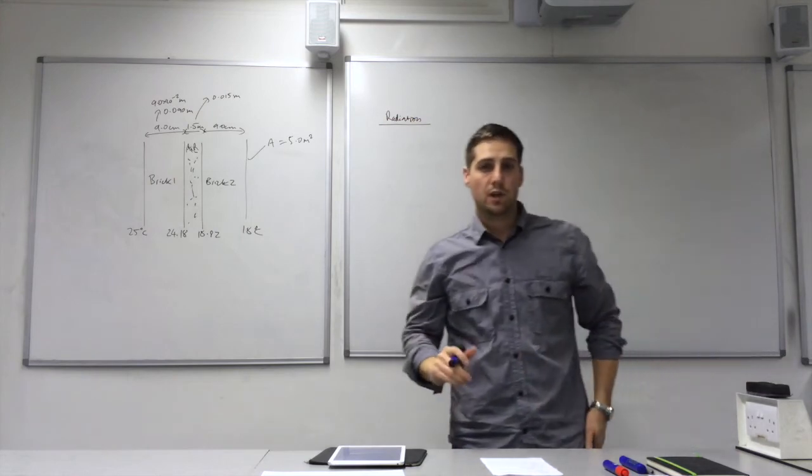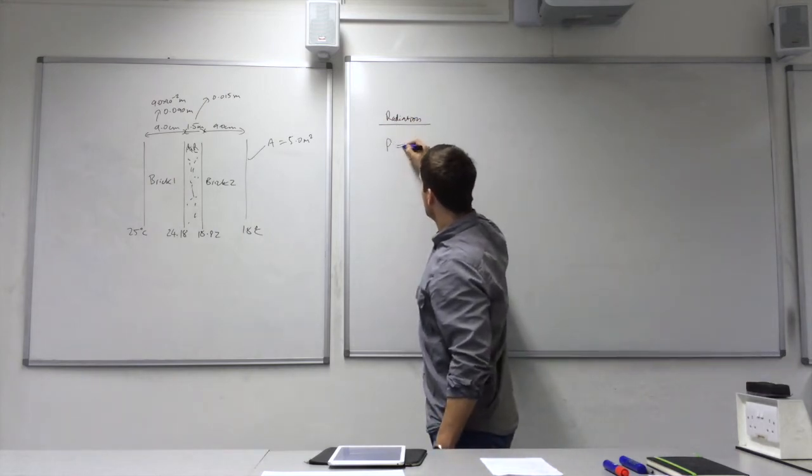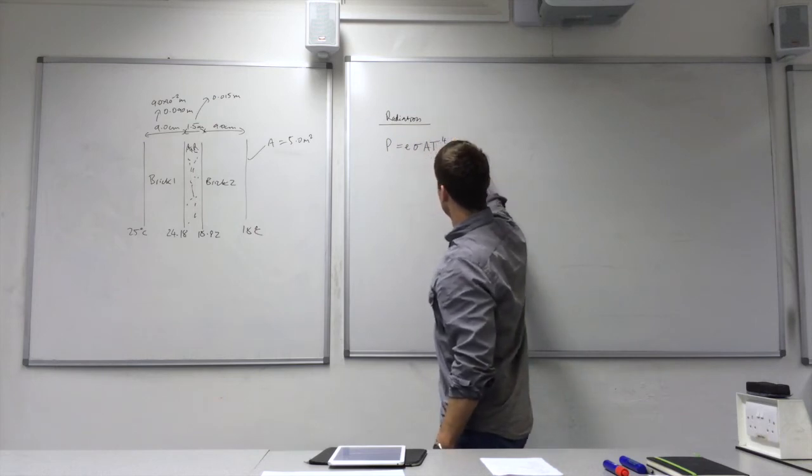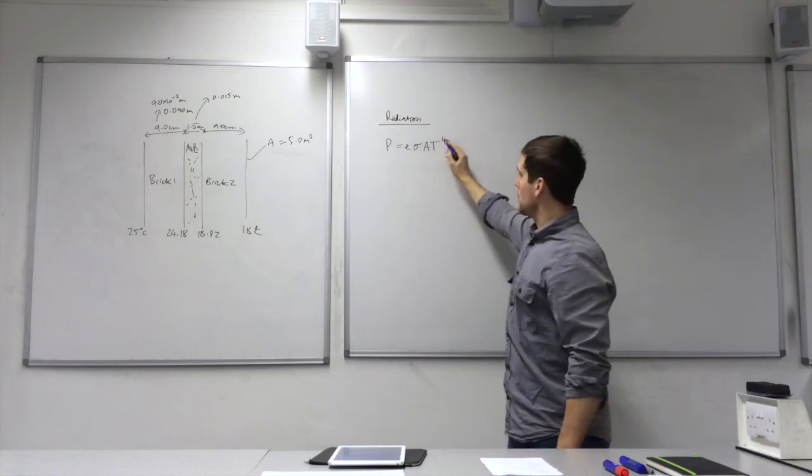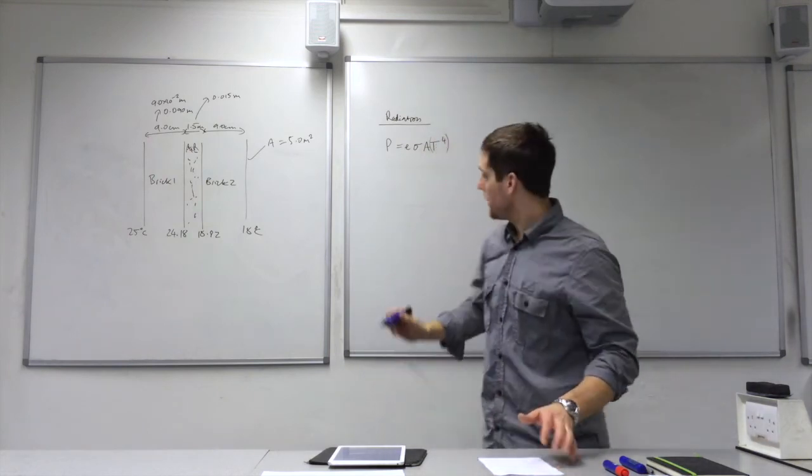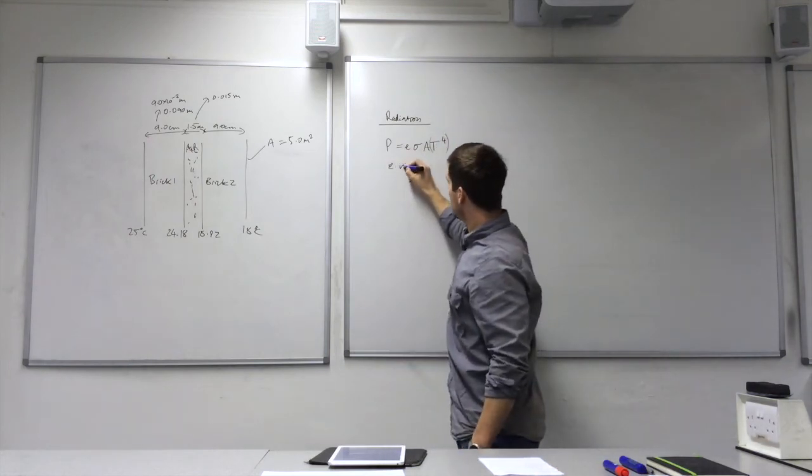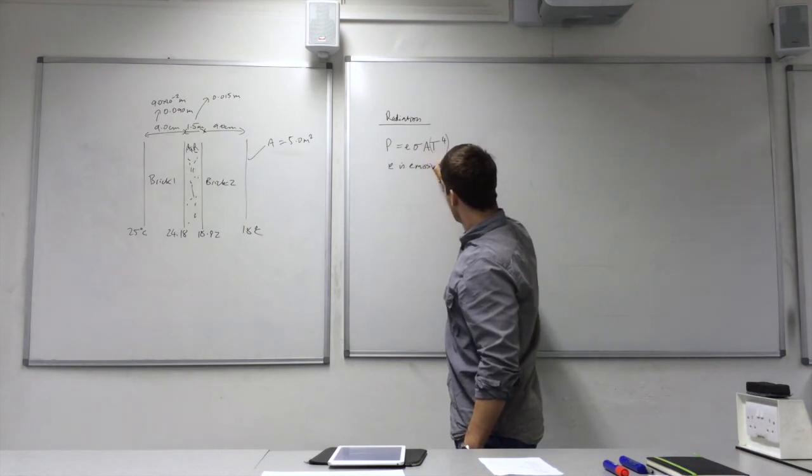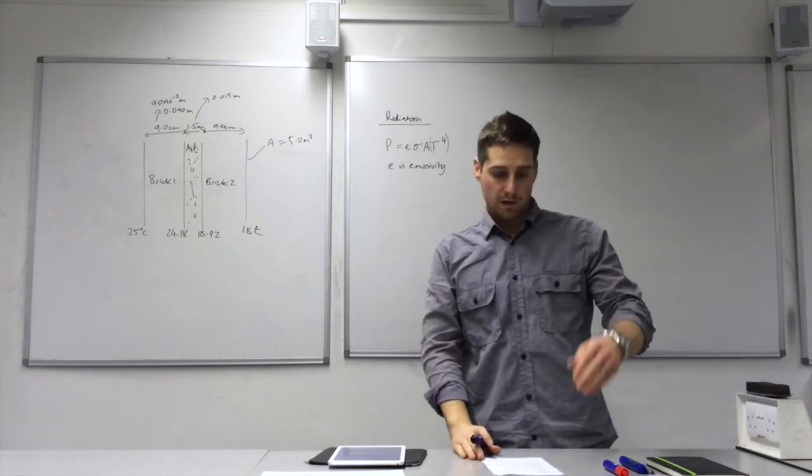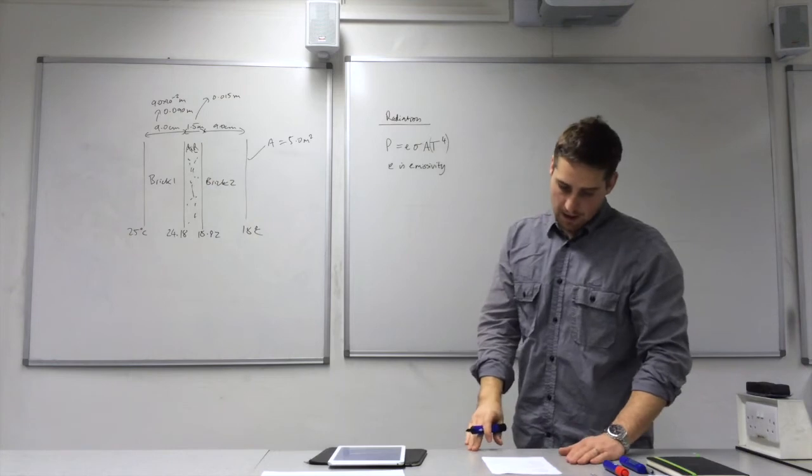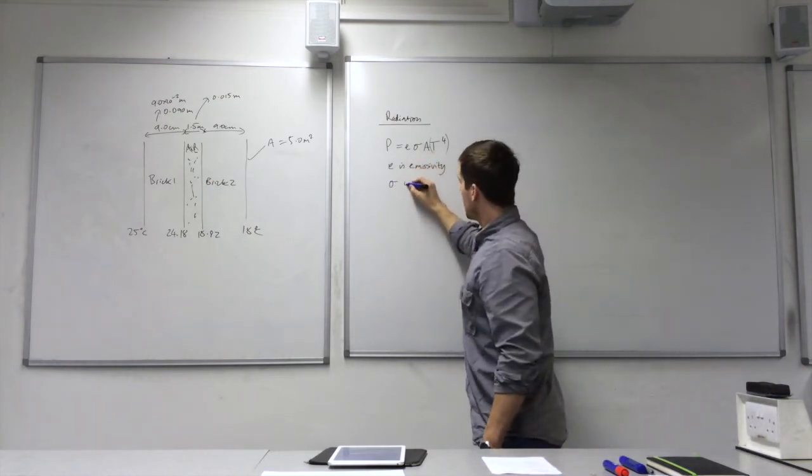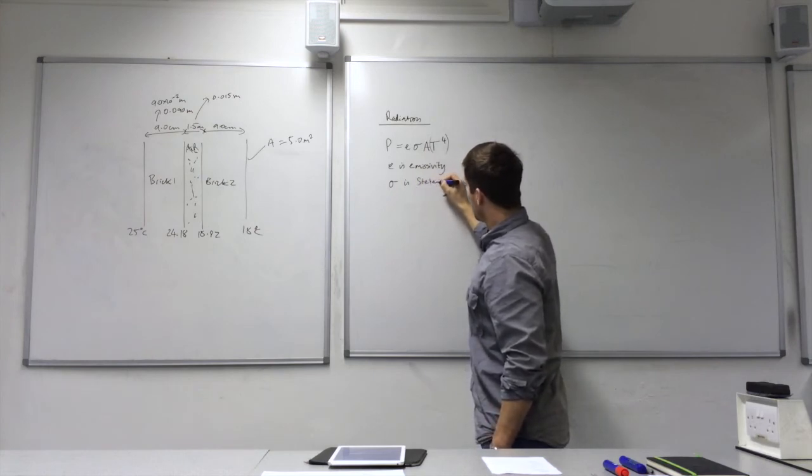For the radiation calculations, we use this equation. P is equal to E sigma A T to the power of 4. That's T raised to the power of 4, not everything. So just that T there. E is the emissivity. And that will change depending on the surface that you're calculating for. Sigma, this is a Greek letter sigma. That's Stefan constant.